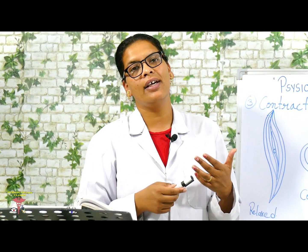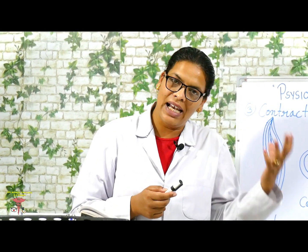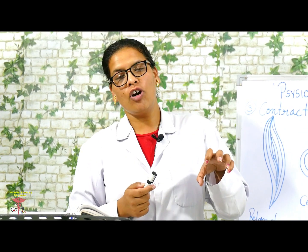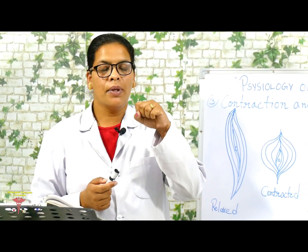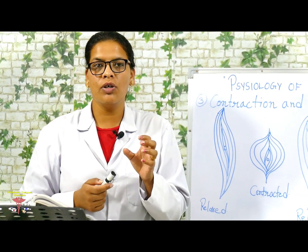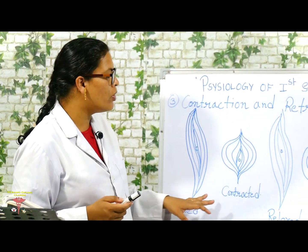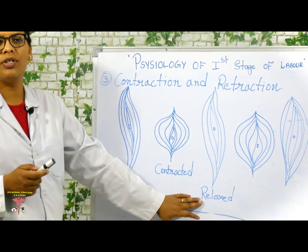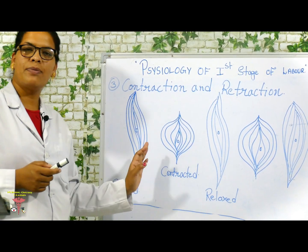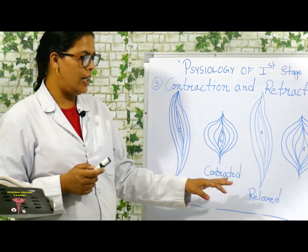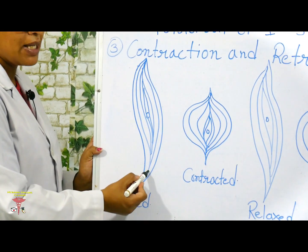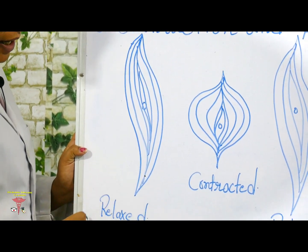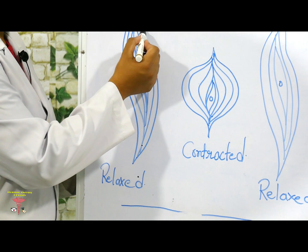During contractions, the fibers are temporarily shortened, but during relaxation they return back to their original tone. When uterine contractions happen the fibers shorten temporarily, and when the muscles relax the fibers come back to the previous length.